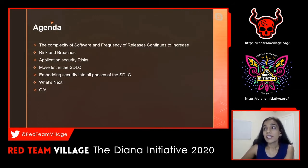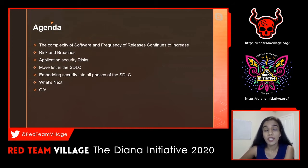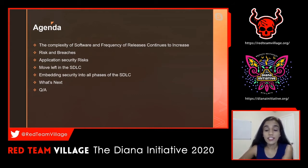My agenda for today is to talk about how software complexity is increasing and how security needs to catch up, risks and breaches, and application security risk. The solution I'm proposing is something we're all doing, but still missing a lot of things. We'll talk about moving left in the SDLC and go through all the phases of SDLC. After that, we can take questions.